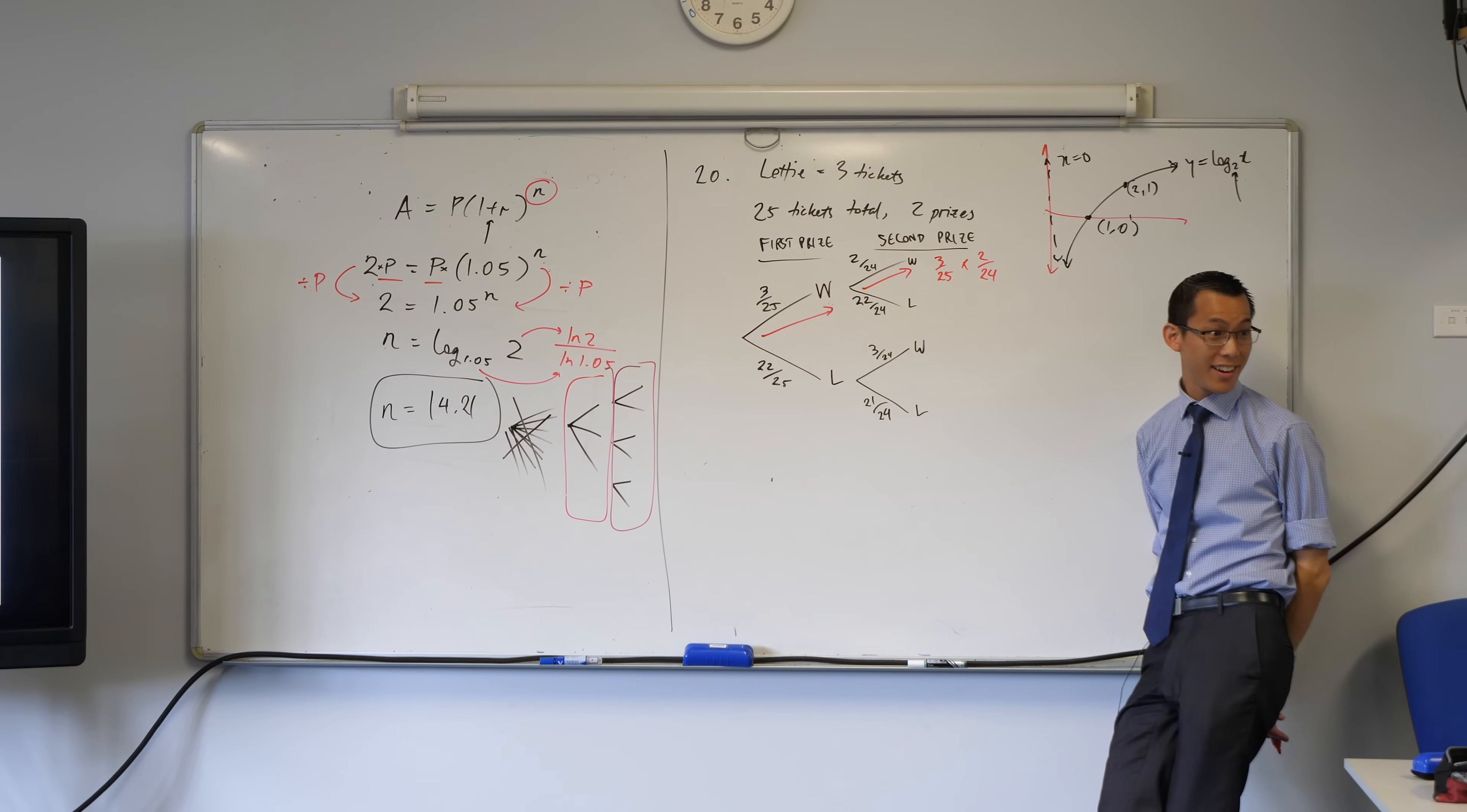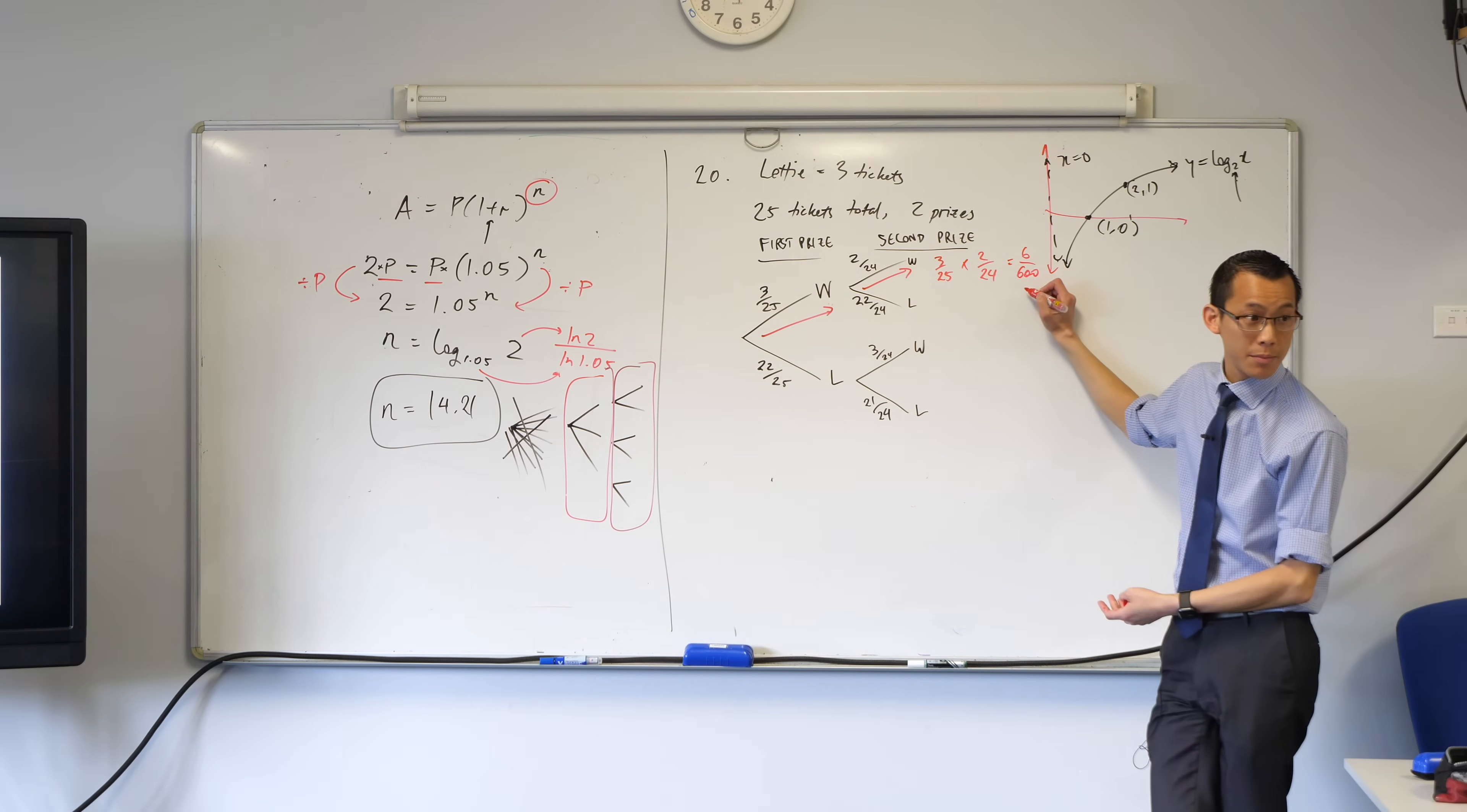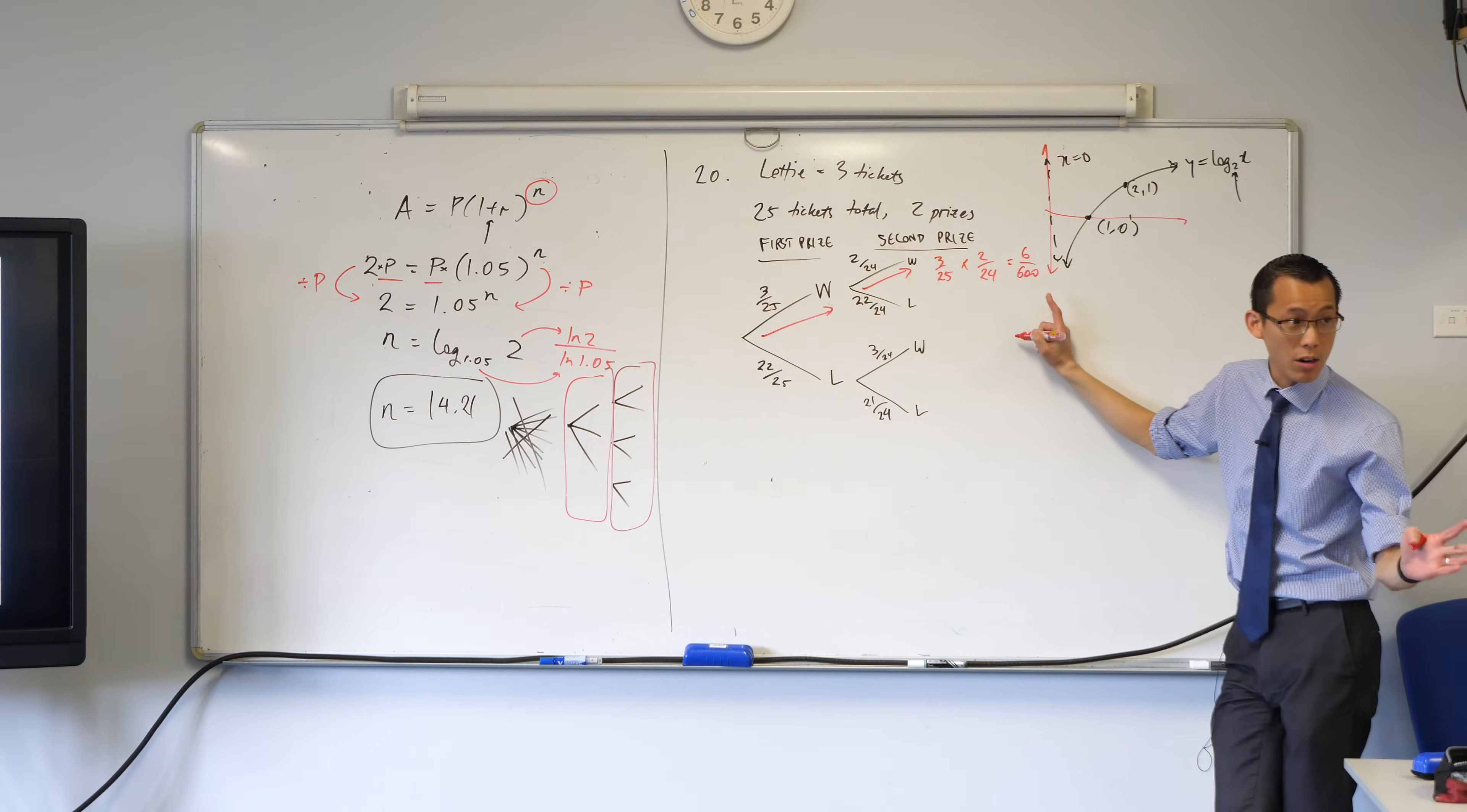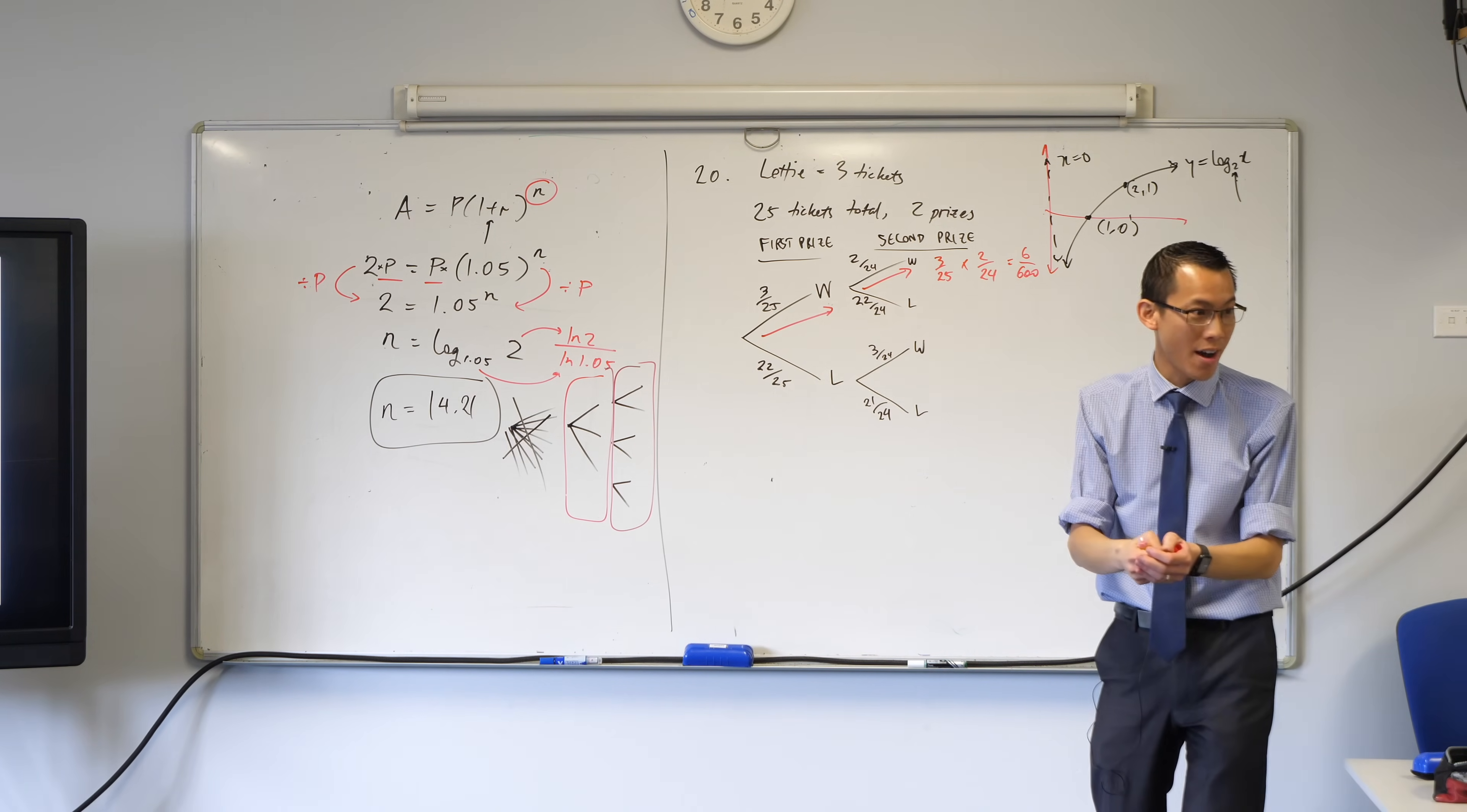Which equals what? Looks like it will be 6 out of 600, I think? Yeah. Which is 1%. But this is not the whole deal, right? This is just the probability that she wins the first and the second prize. There's another way for her to win the second prize.